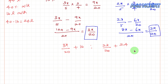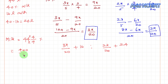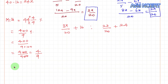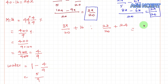After all this, milk becomes 44 4/9% of the total mixture. Converting: 44 4/9% = (44×9 + 4)/9 % = 400/9 % = 400/900 = 4/9. So milk is 4/9 of the total mixture. Therefore water is 1 minus 4/9 = 5/9 of the total mixture. The milk to water ratio is 4/9 : 5/9, or equivalently 4:5.